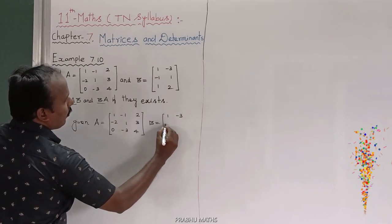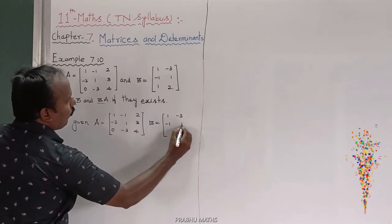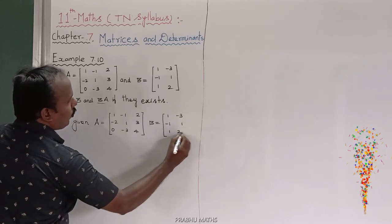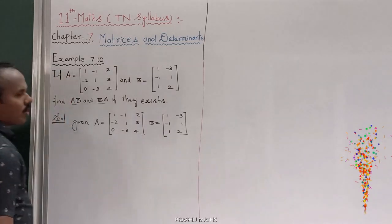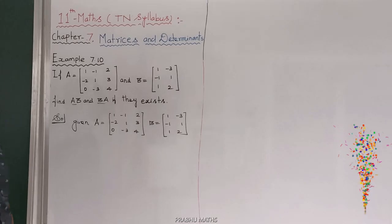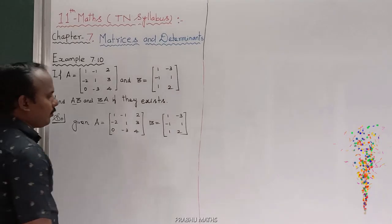Next, the B matrix is equal to: 1, minus 3; minus 1, 1; 1, 2. That is the B matrix.